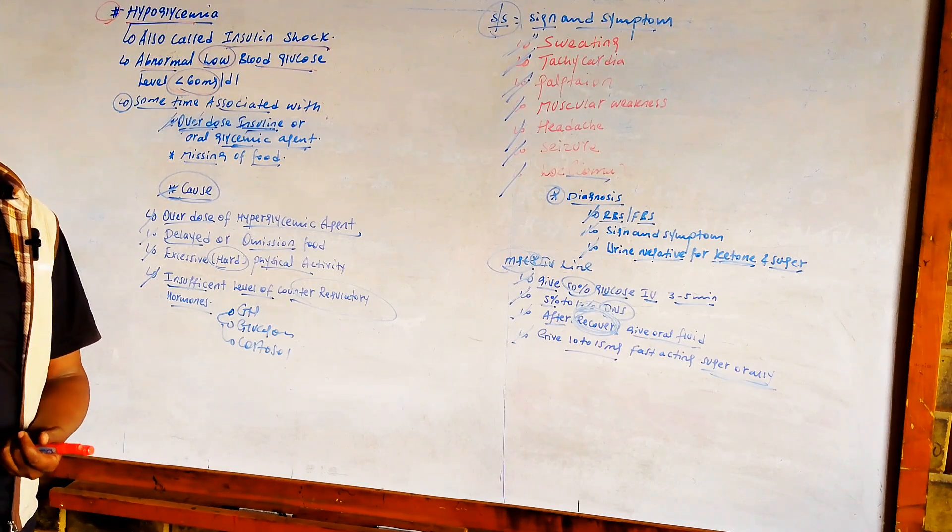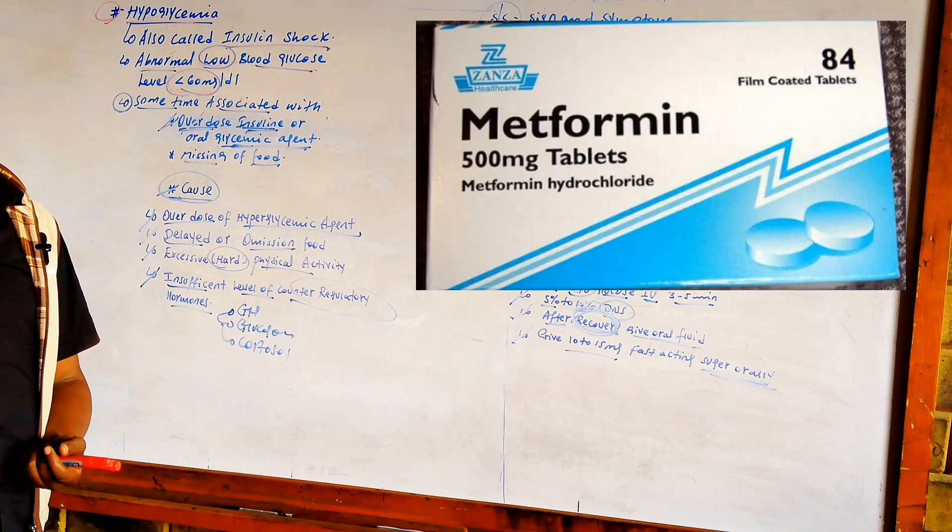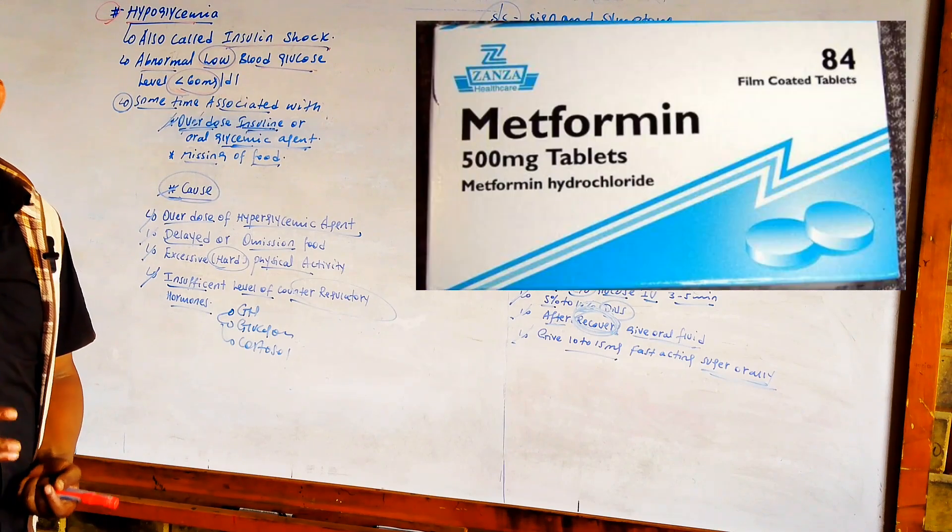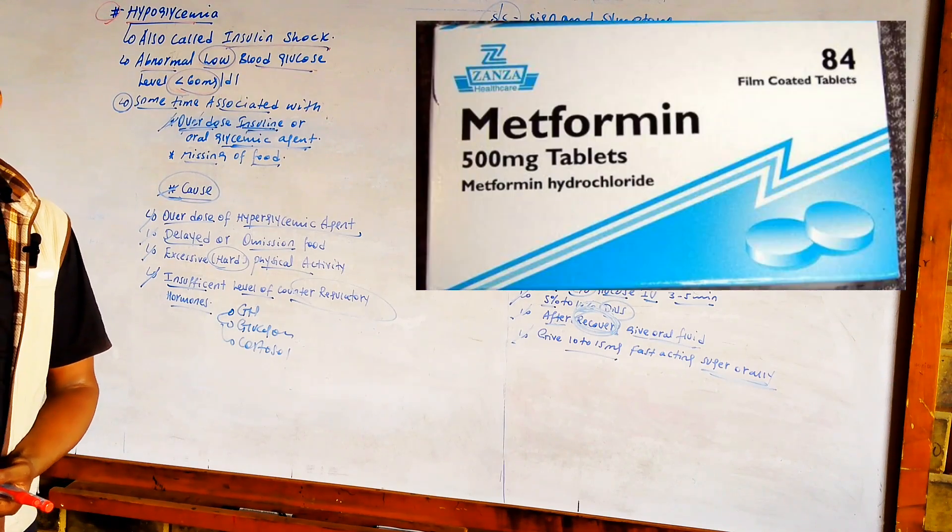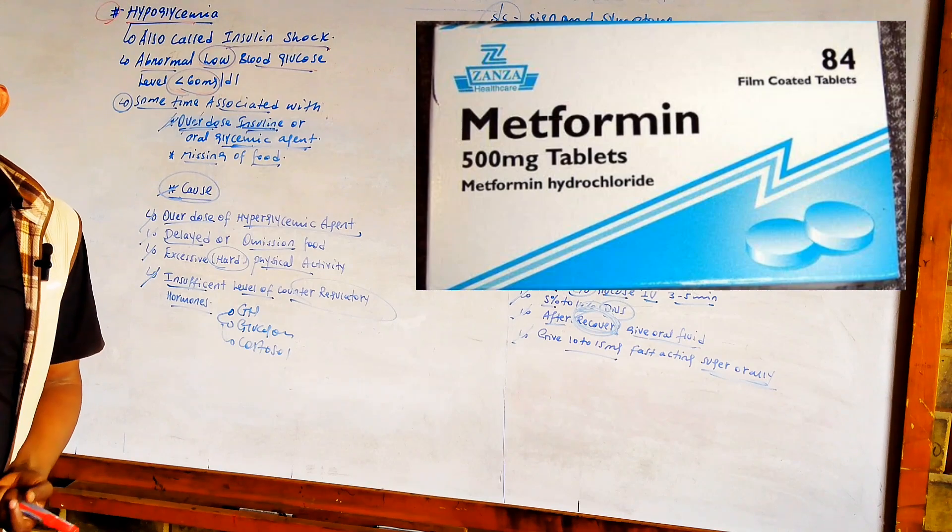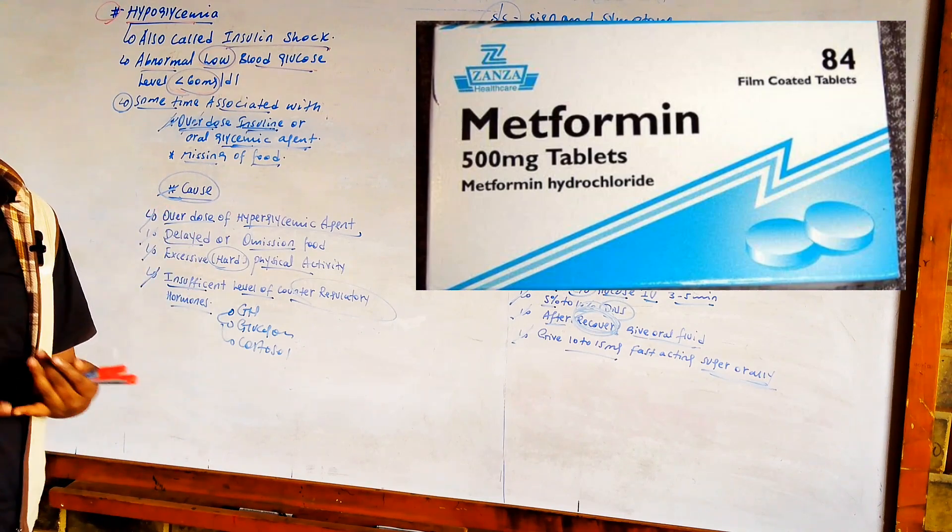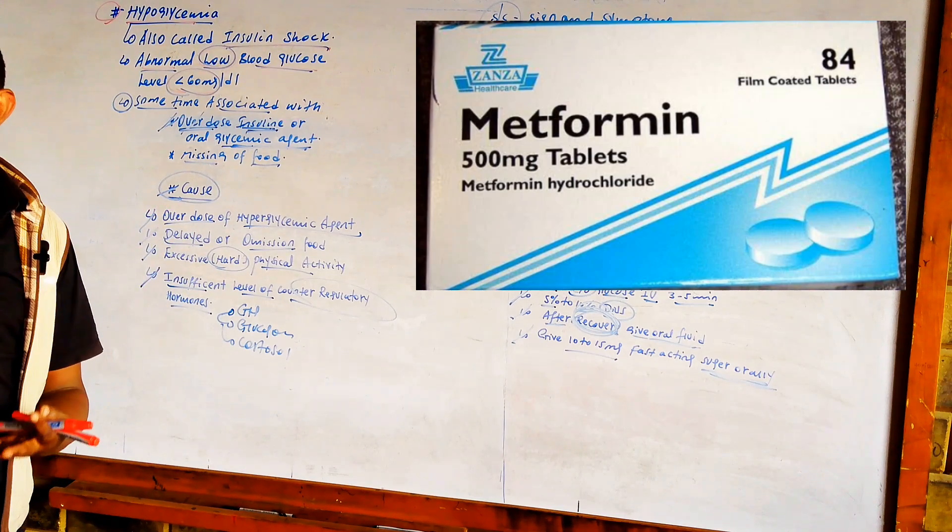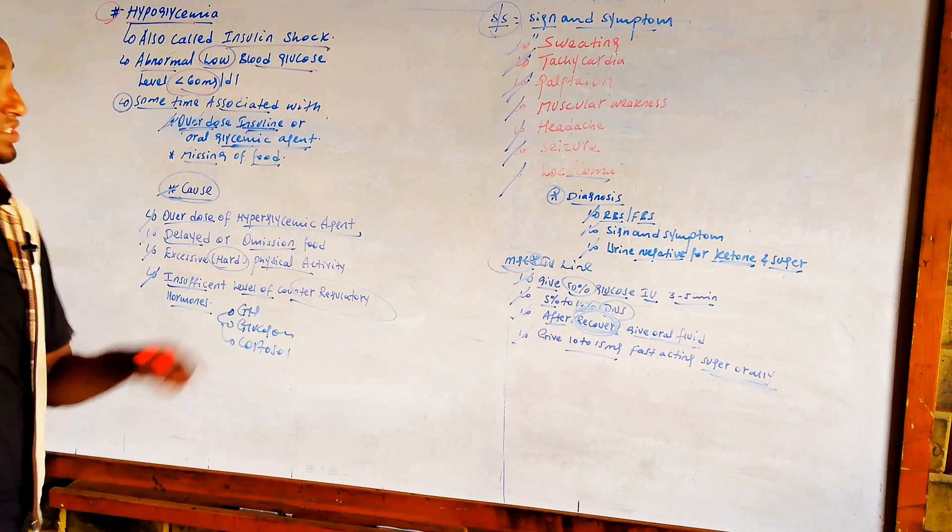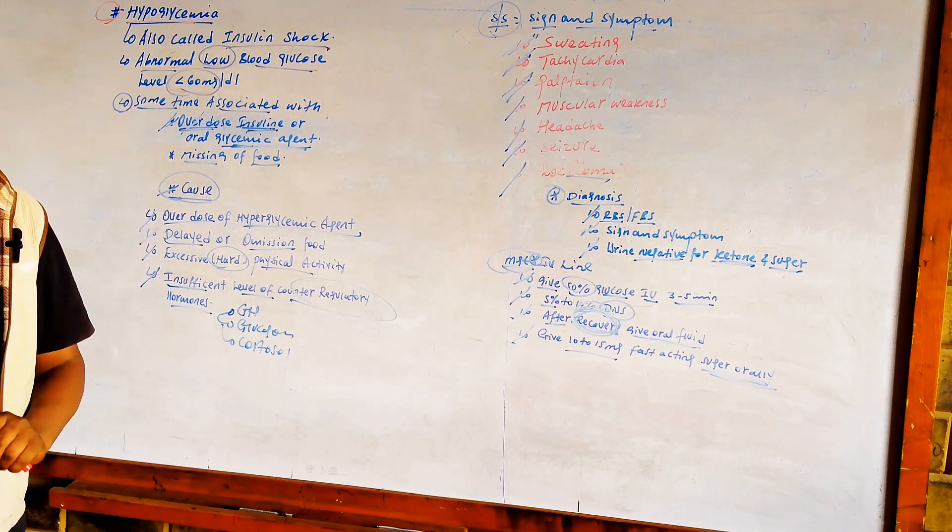Hypoglycemia cannot occur when a patient is taking metformin overdose, because metformin is a euglycemic agent and will never induce hypoglycemia. Except metformin, medications like glimepiride and insulin, when taken in overdose, cause hypoglycemia.